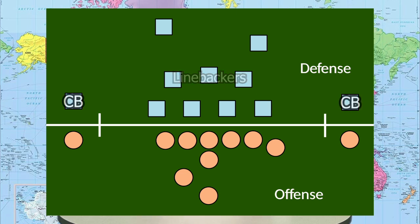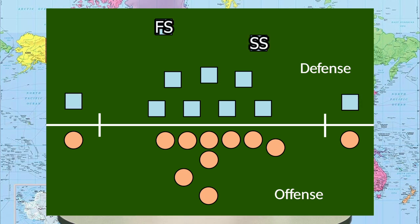Then you have the defensive backfield — corners, who line up outside the formation opposite the wide receivers. The corner's job is to stop the wide receiver and cause havoc, get turnovers, mostly picks. Safeties are often seen as the last line of defense. You've got the strong safety and the weak safety. They line up with the corners and are responsible for stopping the big play.